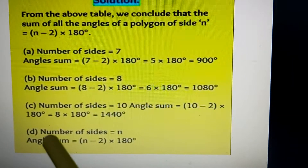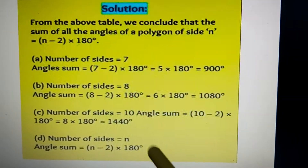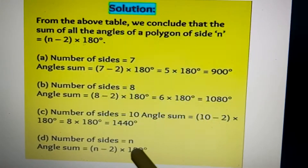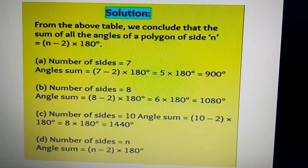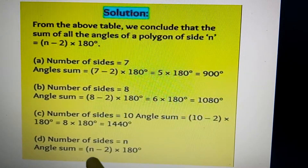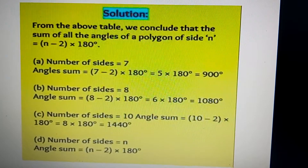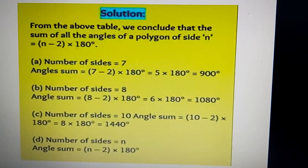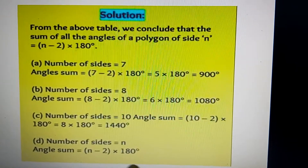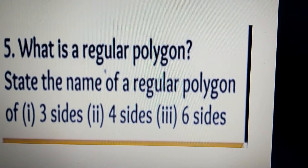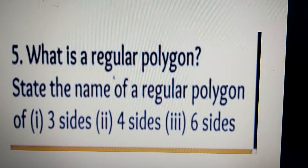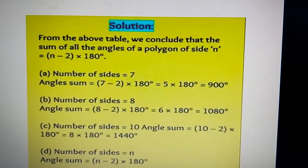For the last case, the number of sides is N itself. So in place of N, the same variable N is used, giving the answer as (N minus 2) into 180 degrees.